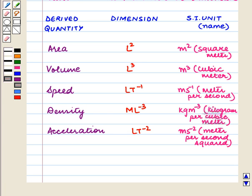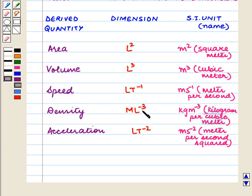The dimension of area is L squared and its SI unit is square meter. The dimension of volume is L cubed and its SI unit is cubic meter. The dimension of speed is L T raised to power minus 1 and its SI unit is meters per second. The dimension of density is M L raised to power minus 3 and its SI unit is kilogram per cubic meter. And the dimension of acceleration is L T raised to power minus 2 and its SI unit is meter per second squared.